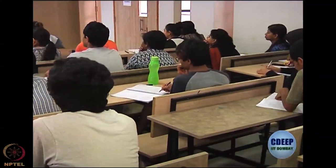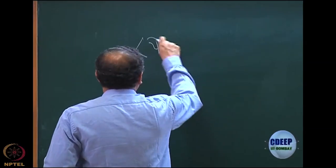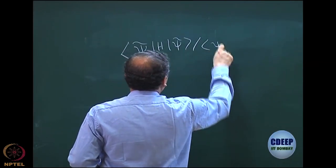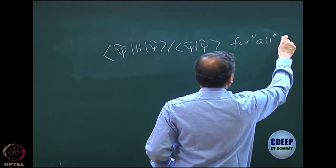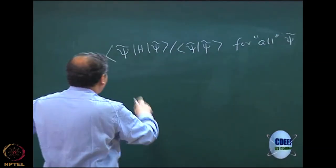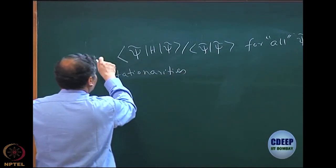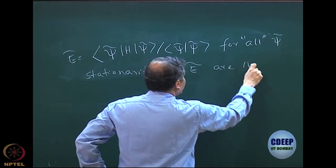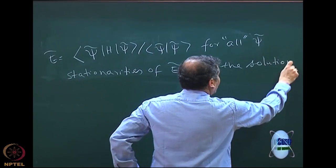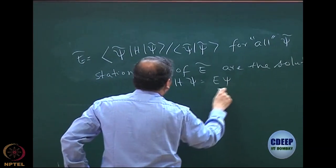I want to quickly revise the variation method. The three important theorems we discussed: first is the Euler theorem, which states that if you do a variation of E tilde equals psi tilde A psi tilde over psi tilde psi tilde for all psi tilde - and this 'all' means the entire Hilbert space - then the stationary points of E tilde are the solutions of the Schrödinger equation.